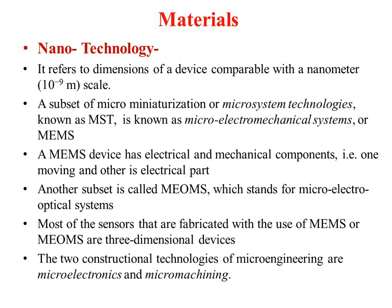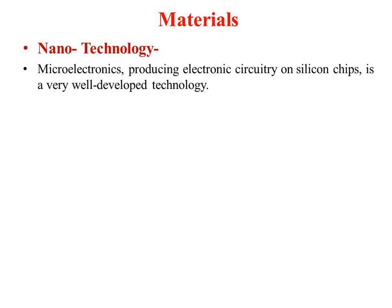Two construction technologies exist for micro engineering: micro electronics and micro machining. The best example of micro electronics is VLSI or ULSI technology — essentially whatever integrated circuits we manufacture. The IC fabrication process uses SSI, MSI, or VLSI technologies to manufacture a large number of components on a small chip.